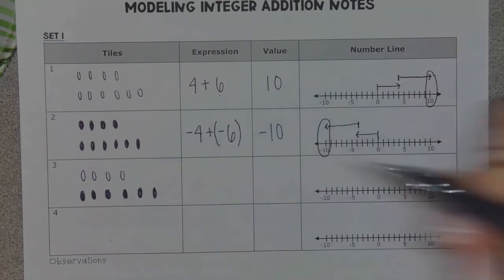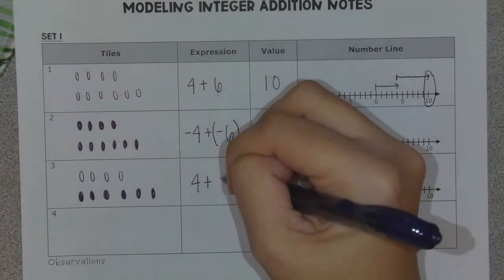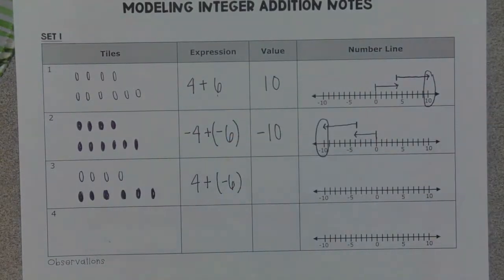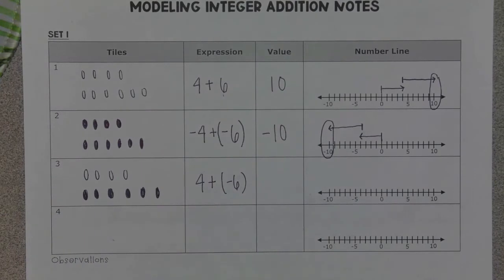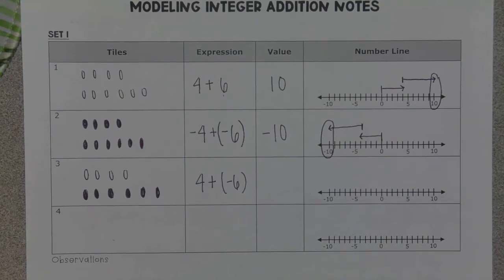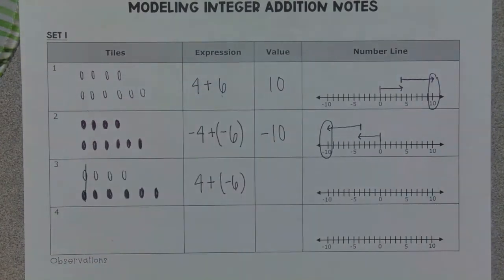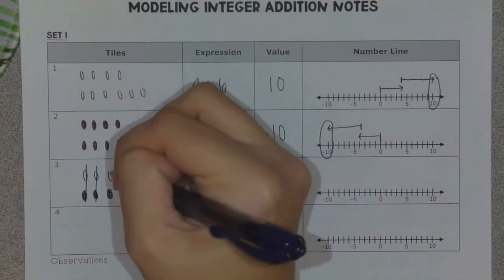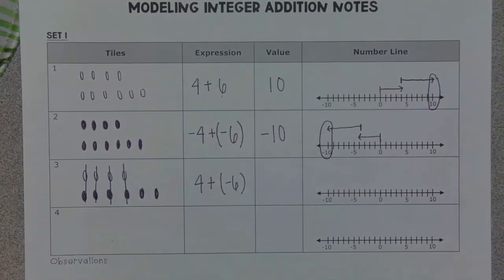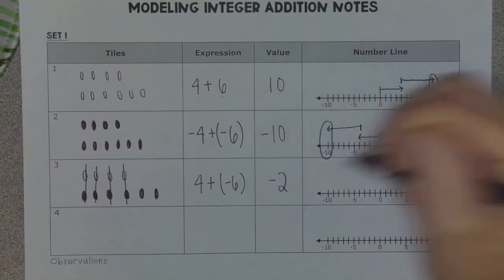Since I have a combination of positives and negatives, I need to get rid of any zero pairs that I have. Remember, zero pairs are made up of one positive and one negative, and when combined they have a value of zero. So this right here is a zero pair — I can get rid of it. There's another zero pair, another zero pair, another zero pair. So all I'm left with is a value of negative two.